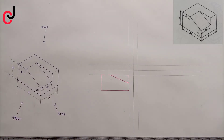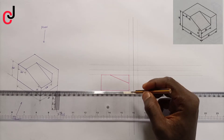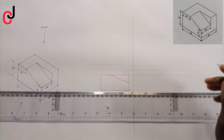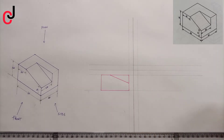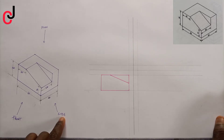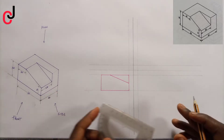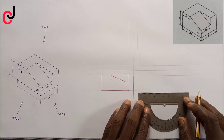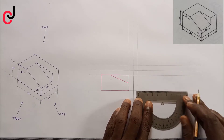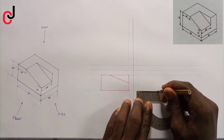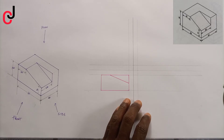Then we'll move to our side view. Project a line to my right. From our side view, the length is 40 mm, so measure 40 mm, indicate it to the point, and project the point upward to the horizontal line.